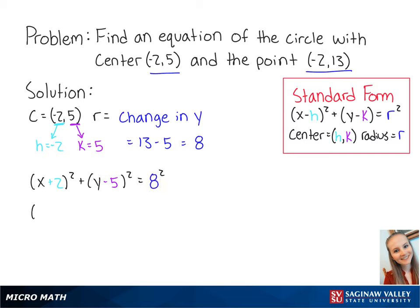This can be simplified as (x + 2)² + (y - 5)² = 64. And this is the final answer.